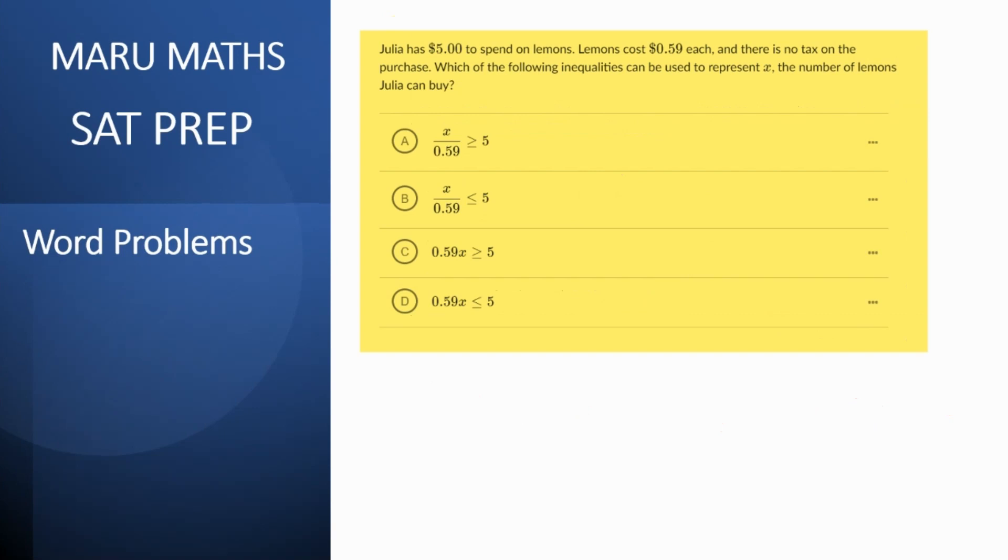All right let's take another question. Now we're going to look at questions which are word problems with inequalities. So the first question is Julia has five dollars to spend on lemons. Lemon costs 0.59 dollars each and there is no tax on purchase. So she has five dollars and each lemon costs 0.59.